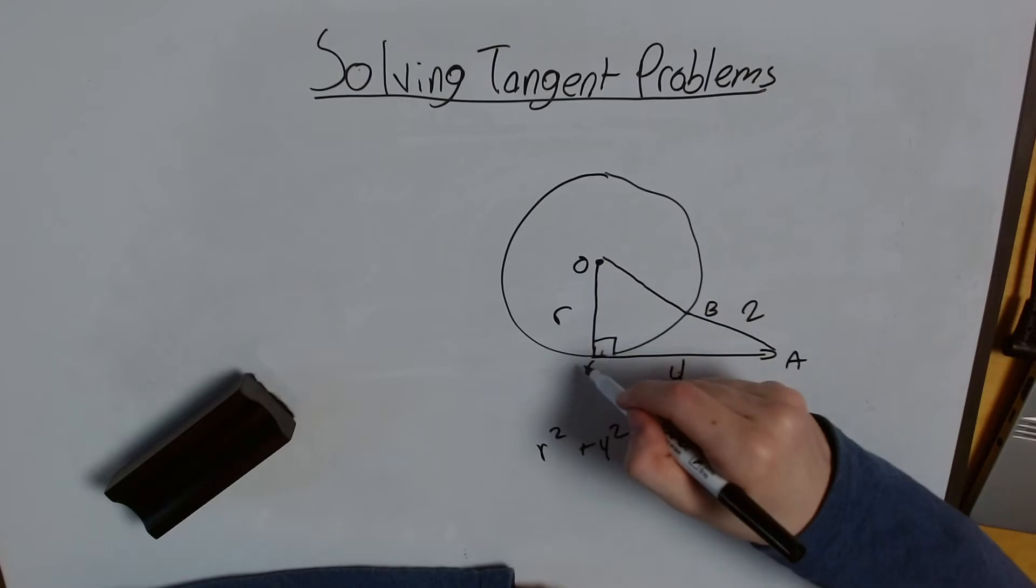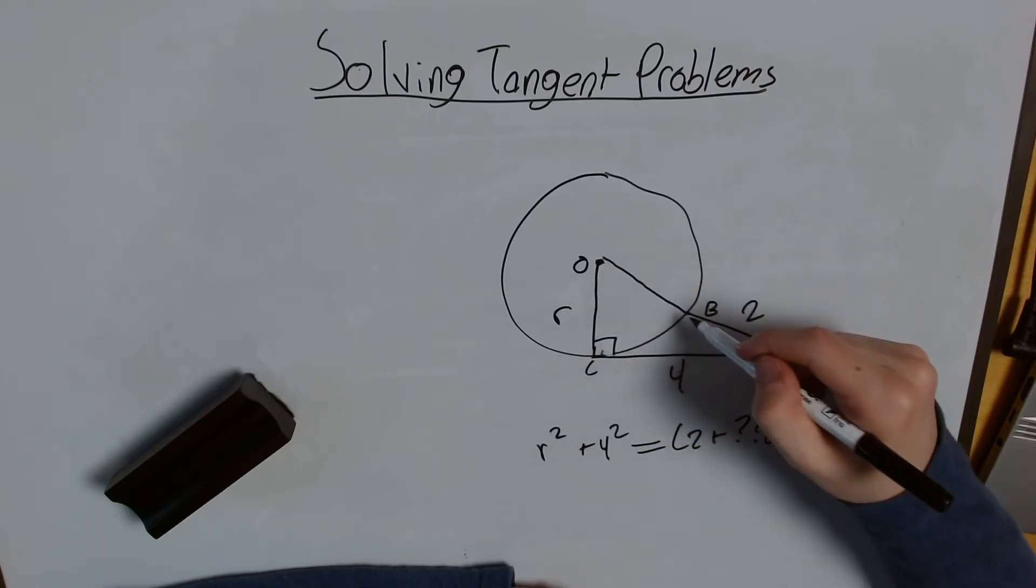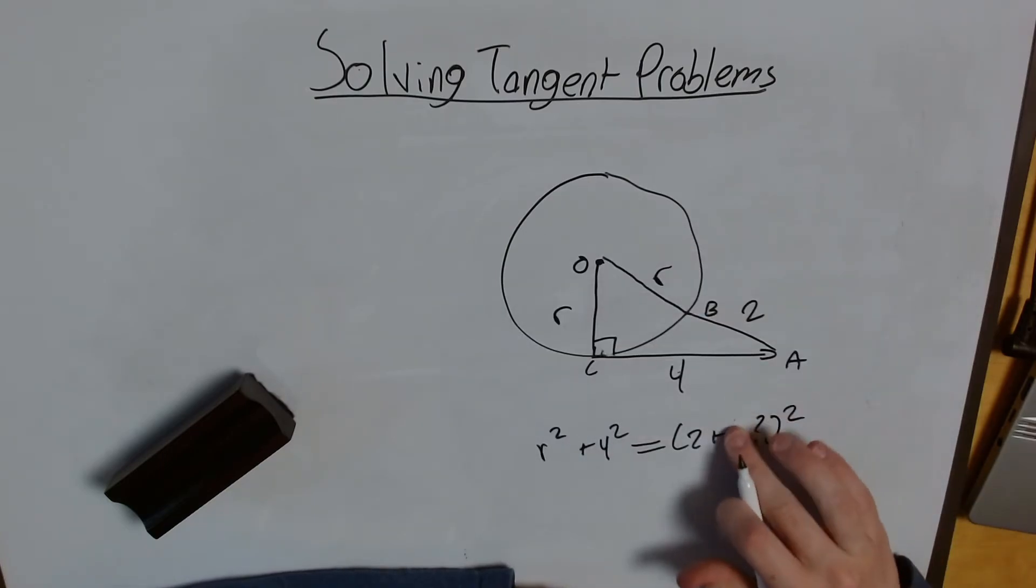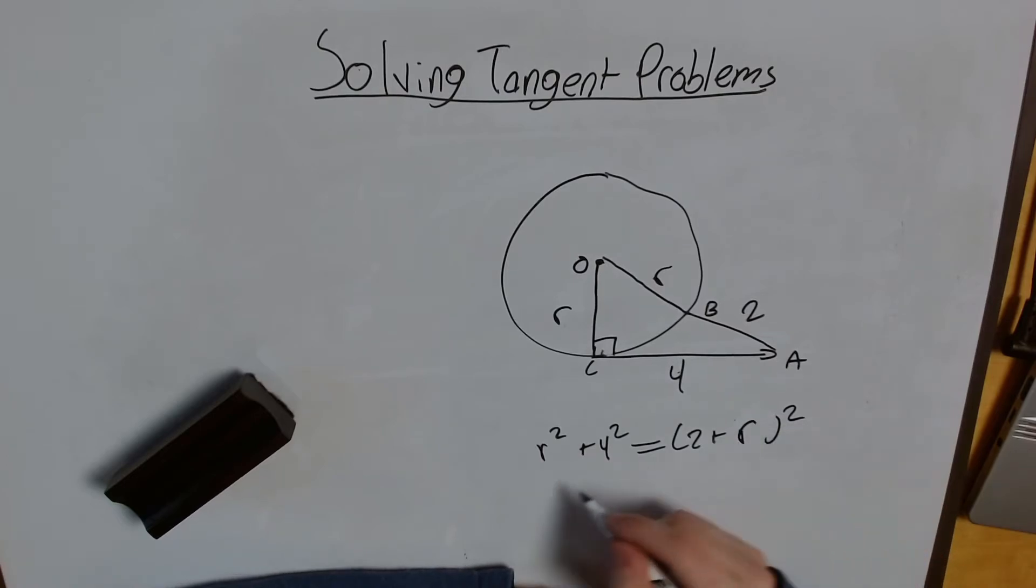Just like this starts from the center and goes to an edge. This starts from the center and goes to an edge. So this length here, OB, is actually equal to this length here, OC. So now, I can actually solve my problem. Because I have R squared plus 4 squared equals 2 plus R squared. I have everything in terms of R or a number, which means I can, in fact, solve my problem.